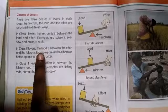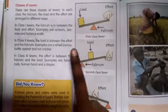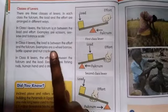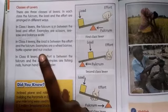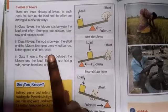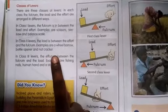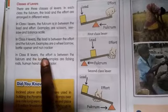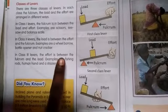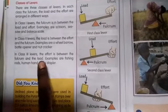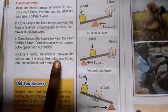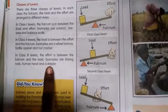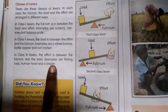In class 2 levers, the load is between the effort and the fulcrum. Examples are wheelbarrow, bottle opener, and nutcracker. In class 3 levers, the effort is between the fulcrum and the load. Examples are fishing rods, human hand, and a stapler.